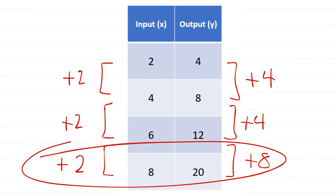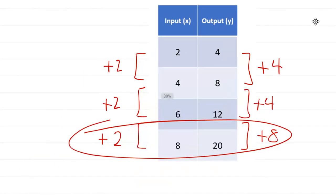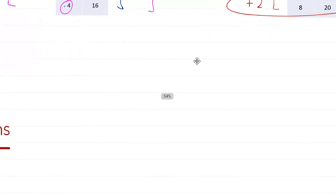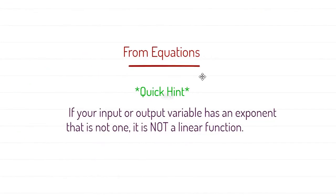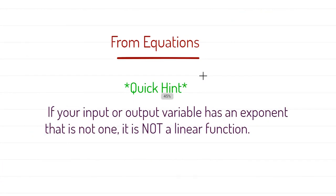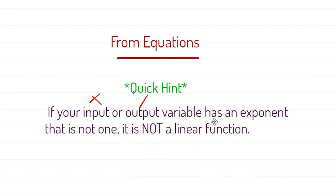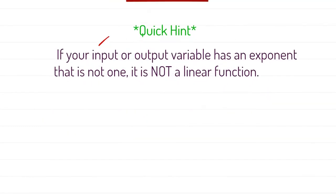Now let's take a look at how we can look at an equation and see if it's linear. Here's basically what I tell my students as a quick way to look at it: if you look at an equation and you see that your variable — x or y usually — has an exponent that's not 1, then it's not a linear equation.